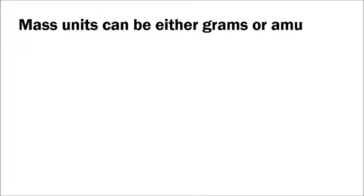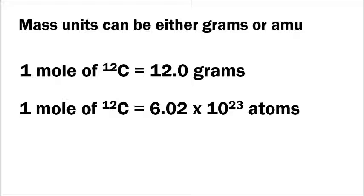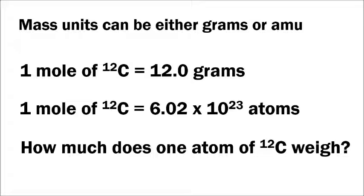Now let's talk about how mass is measured in chemistry. Mass is usually measured in grams, but another unit used in chemistry is the atomic mass unit, or AMU. If one mole of carbon-12 has a mass of 12 grams and contains 6.02 × 10²³ atoms, we can ask: how much does a single atom of carbon-12 weigh? To calculate that, we simply divide 12.0 grams by Avogadro's number.